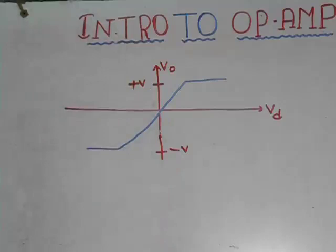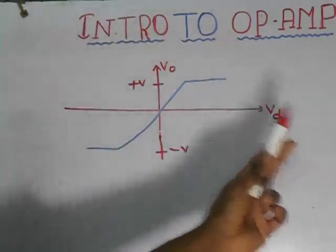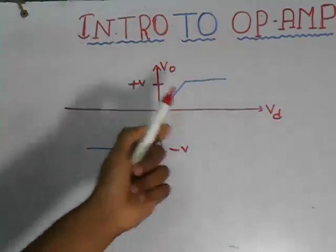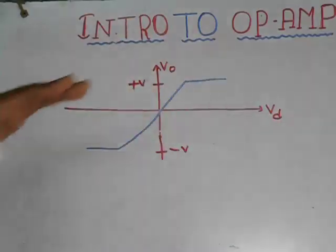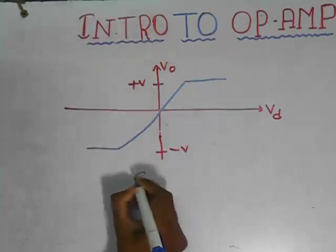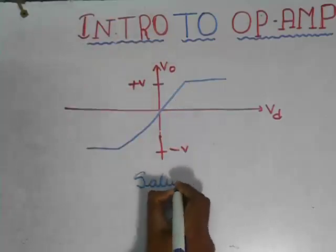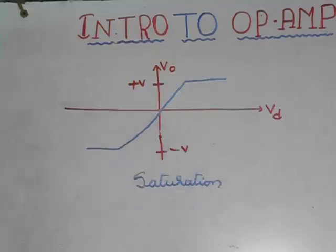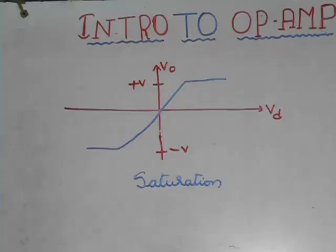To solve any operational amplifier problem, the first point to keep in mind is that the output of any amplifier must lie between the power supplies provided — it should not exceed the power supply voltages. So these voltages, plus V and minus V, are called saturation voltages. The term saturation is applied to any system where levels have reached their maximum values — for example, a saturated sponge is one that cannot hold another drop of liquid.